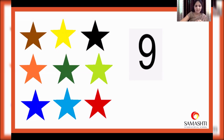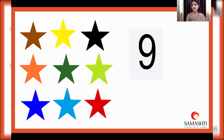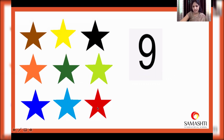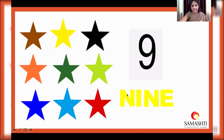Now how many stars can you see here? Let's count together. One, two, three, four, five, six, seven, eight, nine. Nine stars. And what are the colors of these stars? Come on, let's see. Black, yellow, brown, light green, dark green, orange, red, light blue and dark blue. Awesome. So nine stars. Nine. N-I-N-E. Nine.